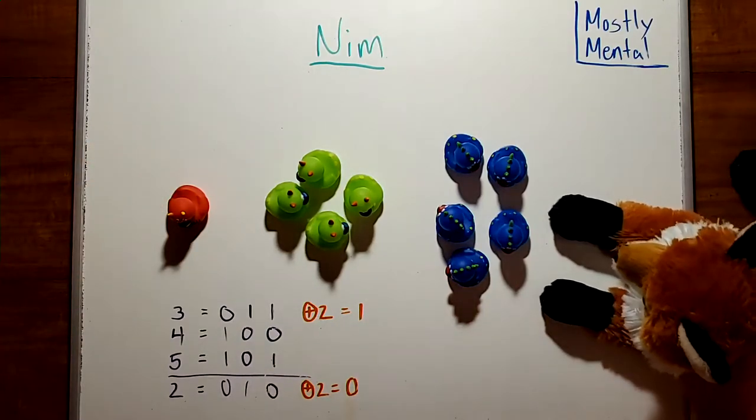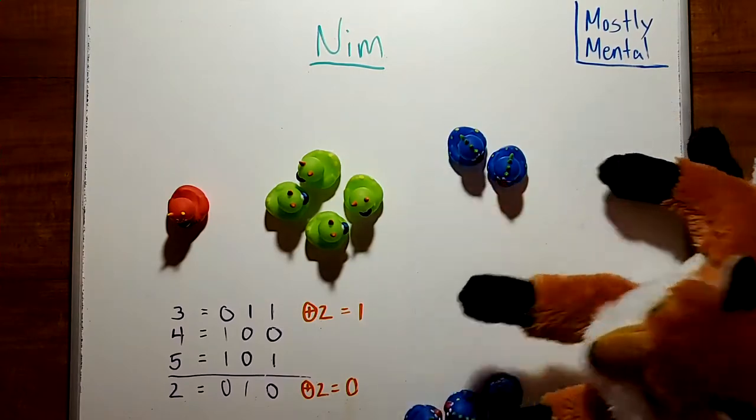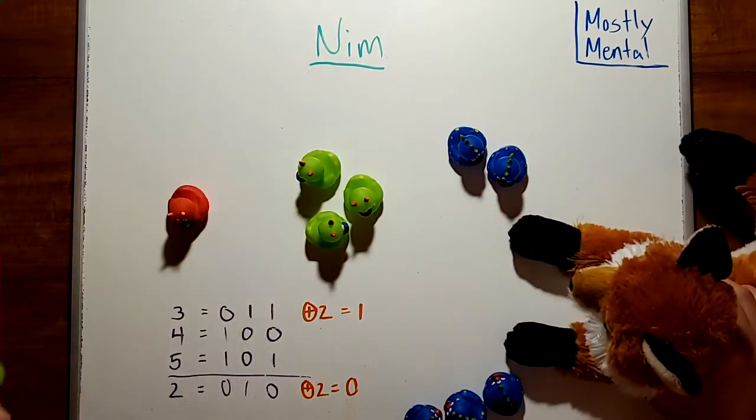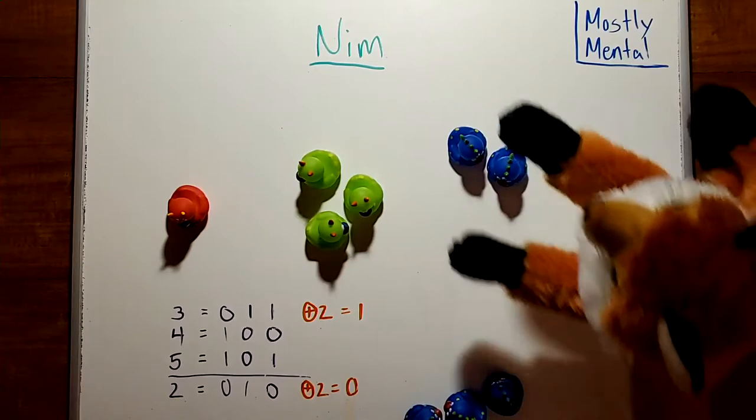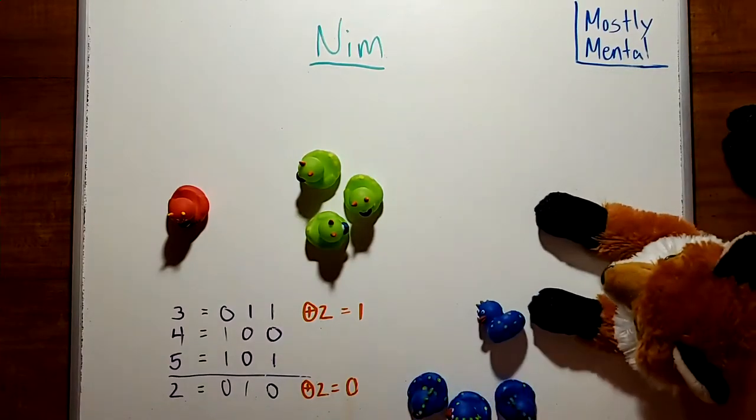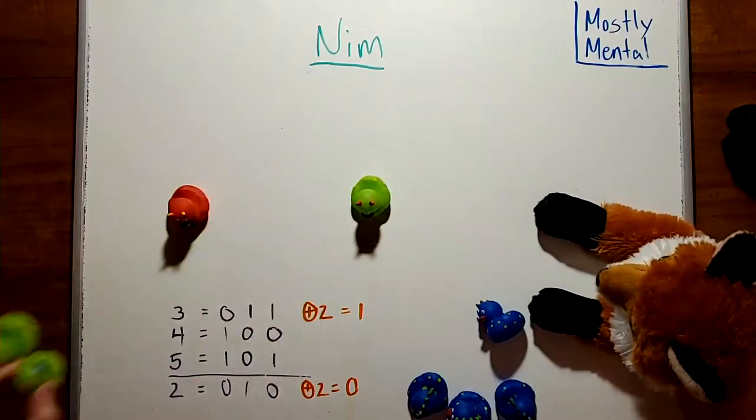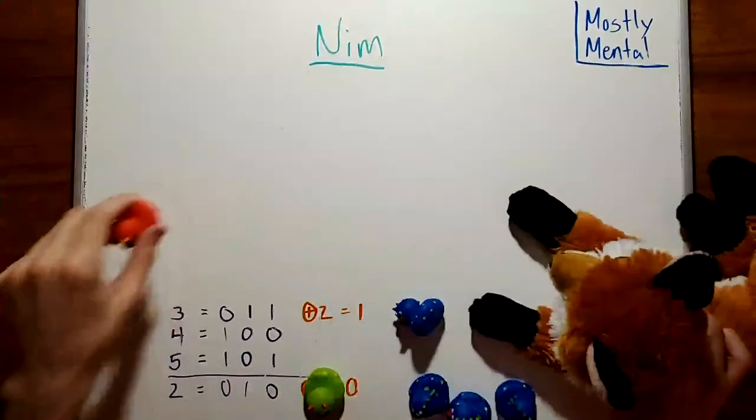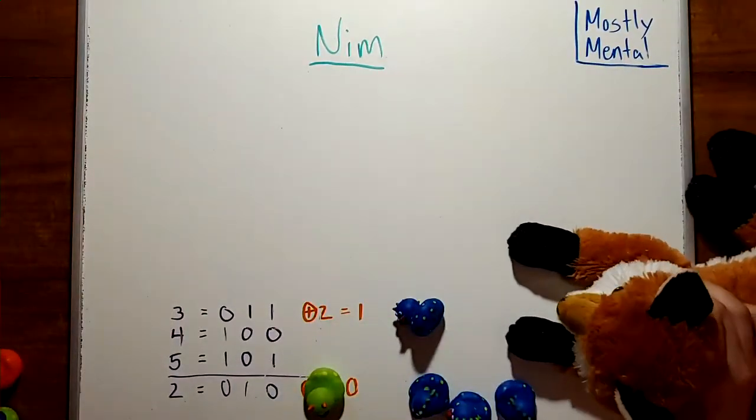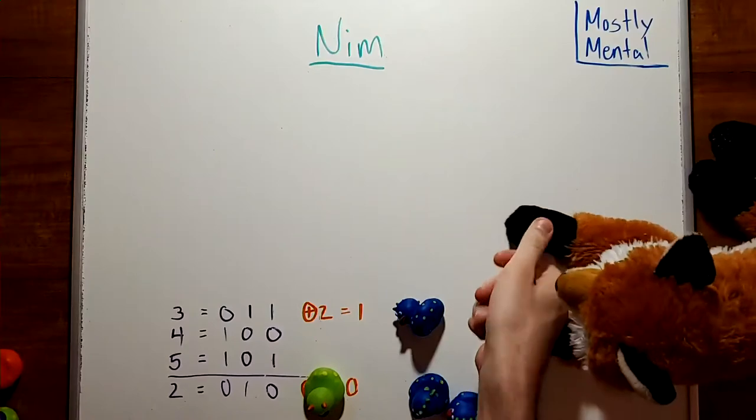And then, no matter what Aurora does, I can always force the sum back to zero. So, no matter how cleverly she plays, she can't beat me. And now, I can finally claim my hard-earned victory. Once again, good game.